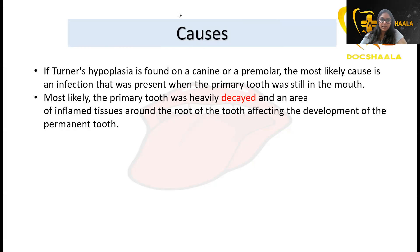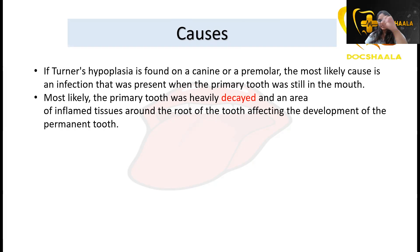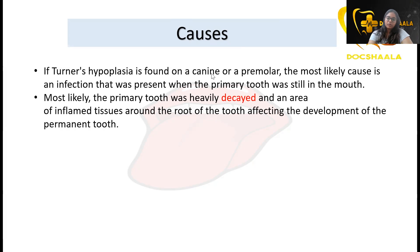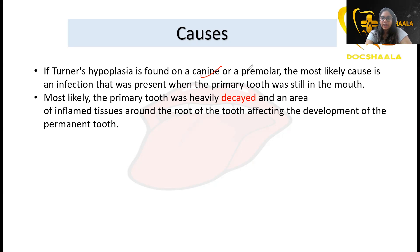Turner's hypoplasia is commonly found in maxillary and mandibular incisors and premolars. Canine is also a common tooth, but mostly incisors and premolars are the most commonly affected teeth.